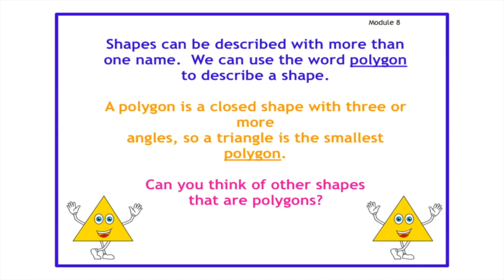Shapes can be described with more than one name. We can use the word polygon to describe a shape. A polygon is another word for a shape — it is a closed 2D shape with straight sides. A polygon is a closed shape with three or more angles, so a triangle is the smallest polygon.